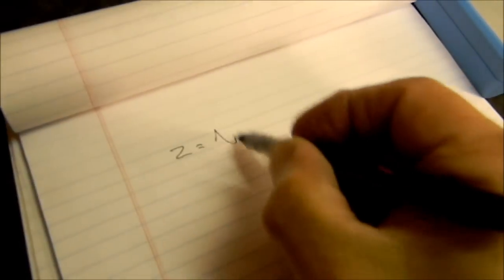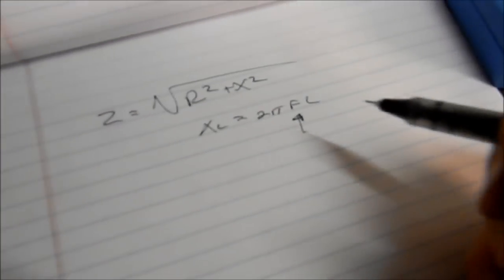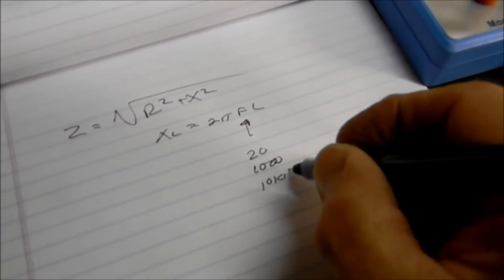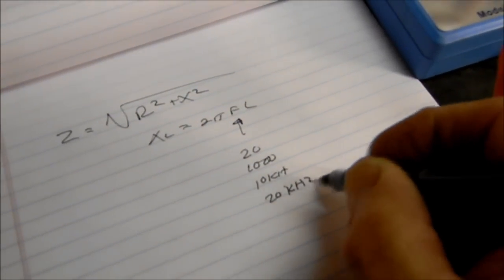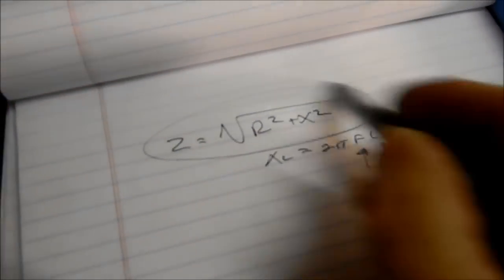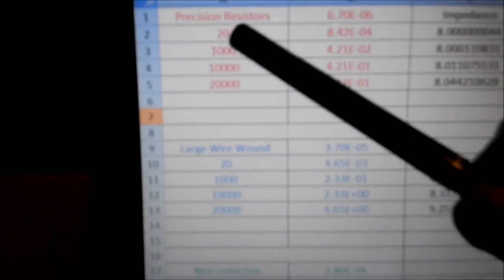With all that said, what we have to do is calculate impedance. Actual impedance Z equals the square root of R squared plus X squared, where XL equals 2πfL. I've put frequencies in the spreadsheet: 20 Hz, 1 kHz, 10 kHz, and 20 kHz - the whole audio range. I've calculated actual Z, which is impedance.